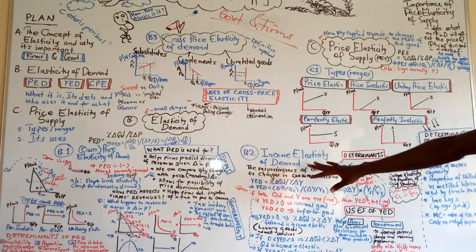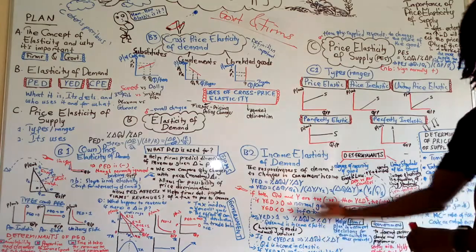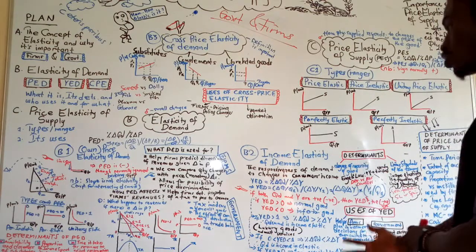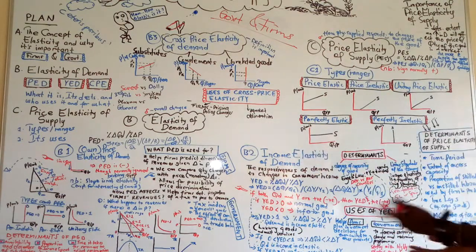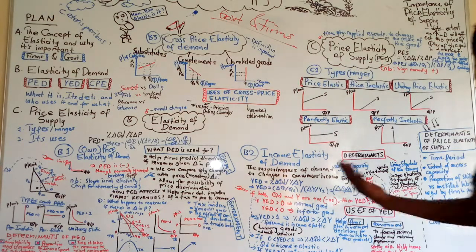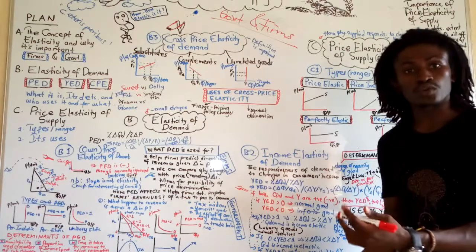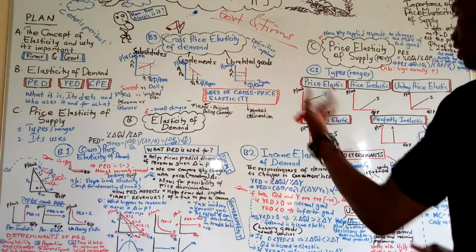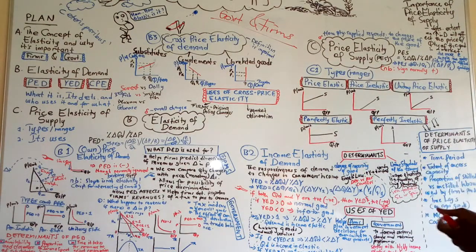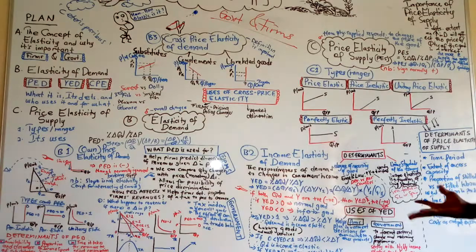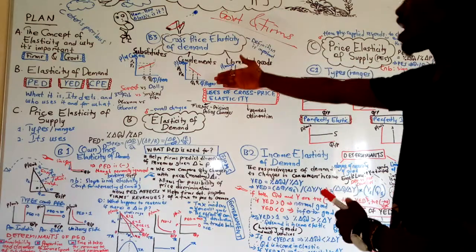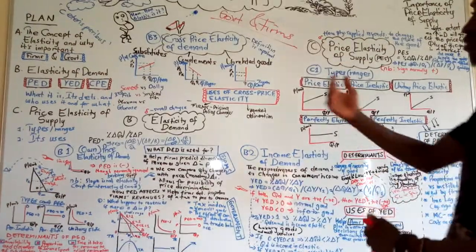Businesses and governments also have to think about what happens to demand when incomes change. This helps businesses to know whether to invest in a new product, looking at the income elasticity of demand. For government, they will have to forecast what will happen to different sectors in the economy. As incomes increase — say when we had the boom in Sierra Leone where our economy was growing really fast — governments have to think carefully about what sectors will be affected by changes in income.